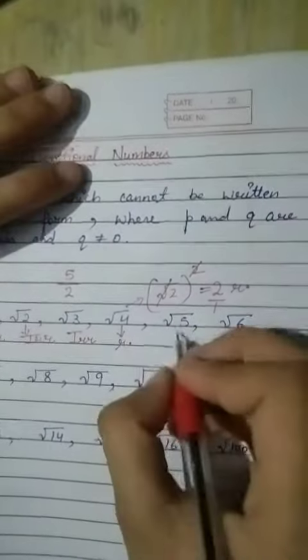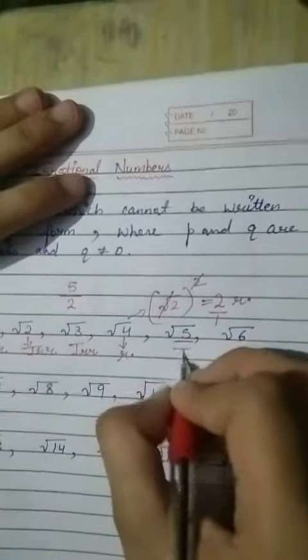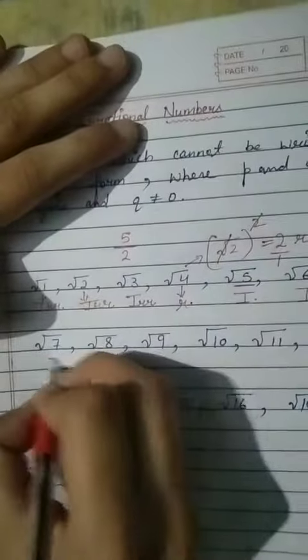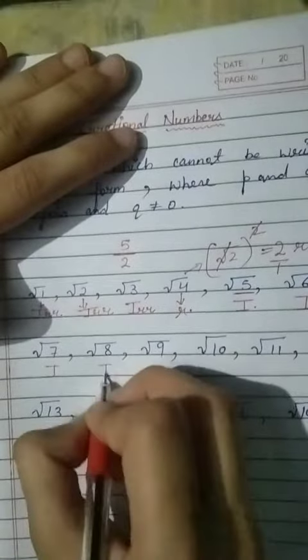Now, √5 we cannot square, so which is this? Irrational. √6 also we cannot square, it's also irrational. √7 also we cannot do, irrational. √8 is also irrational.